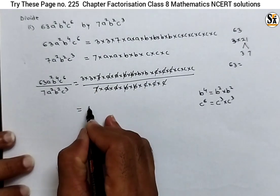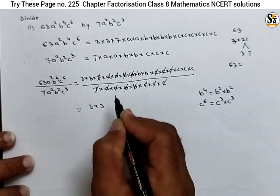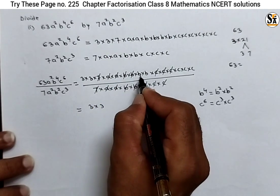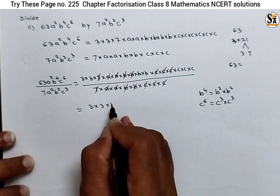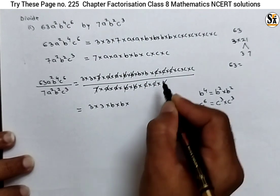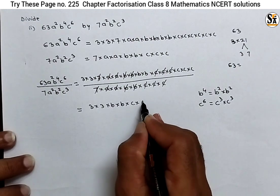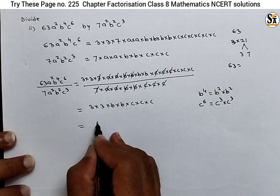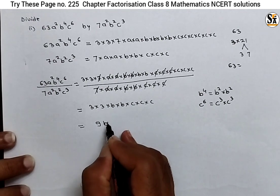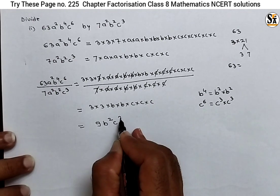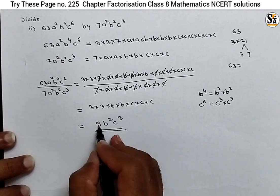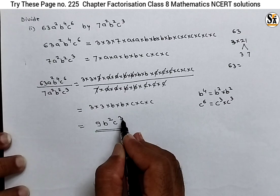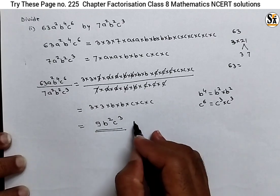Write the remaining factors. Remaining are 3×3, which is 9. The 7 is cancelled, the a's are cancelled, and two b's remain (b×b = b²), and three c's remain (c×c×c = c³). So our final answer is 9·b²·c³. This is our final answer.